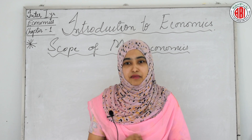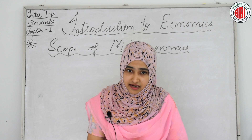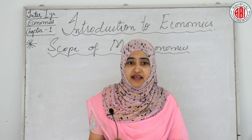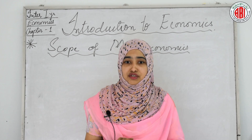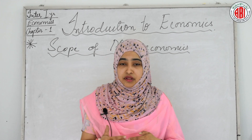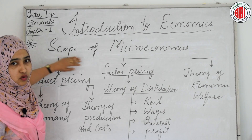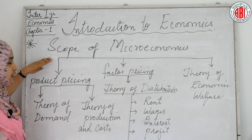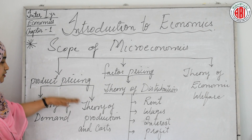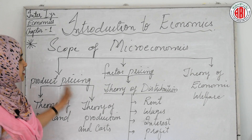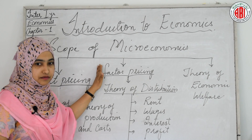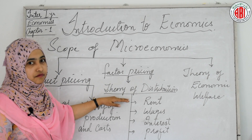Microeconomics examines whether resources are efficiently allocated to individual consumers and producers in an economy, and it is related to the welfare of economics. In the scope of microeconomics, first comes product pricing, which covers the theory of demand and theory of production and costs. Next under the scope of microeconomics is factor pricing, under which the theory of distribution is covered.